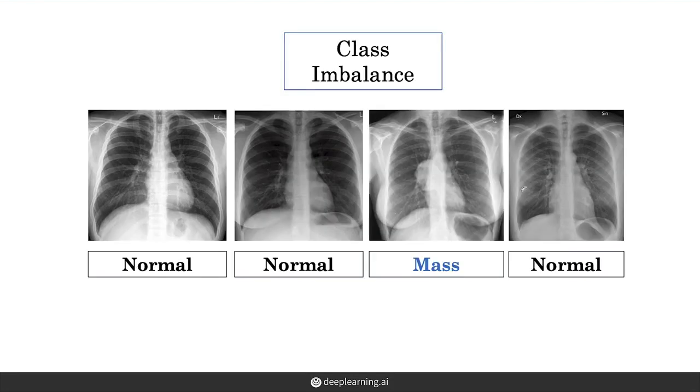Let's start with the class imbalance challenge. So here's the challenge. There's not an equal number of examples of non-disease and disease in medical datasets. This is a reflection of the prevalence or the frequency of disease in the real world where we see that there are a lot more examples of normals than of mass, especially if we're looking at x-rays of a healthy population.